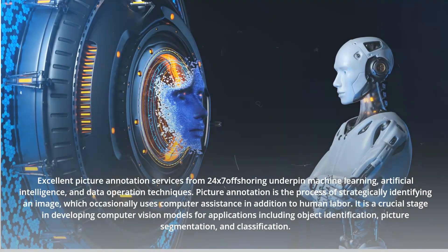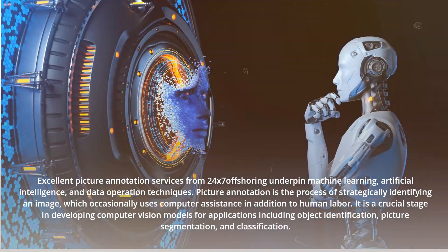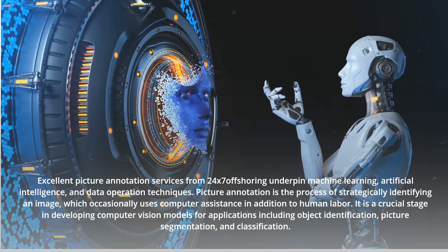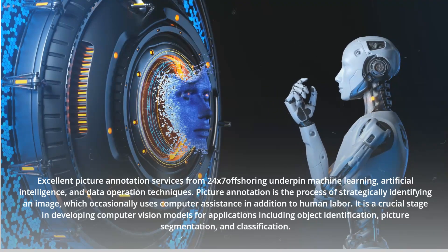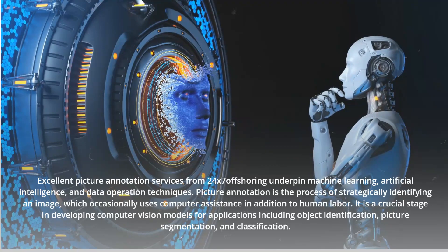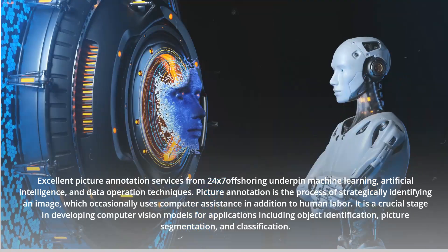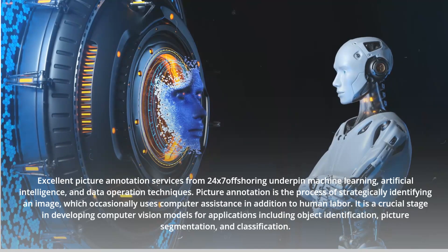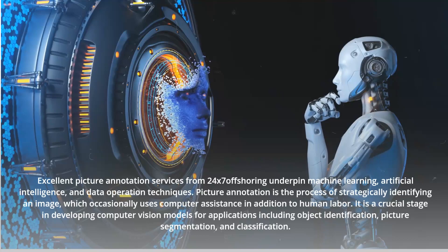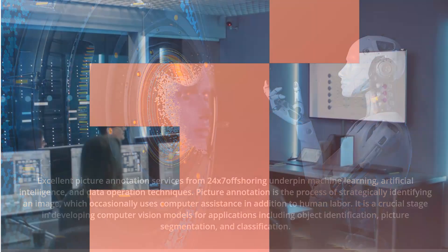Excellent picture annotation services from 24x7 offshoring underpin machine learning, artificial intelligence, and data operation techniques. Picture annotation is the process of strategically identifying an image, which occasionally uses computer assistance in addition to human labor. It is a crucial stage in developing computer vision models for applications including object identification, picture segmentation, and classification.